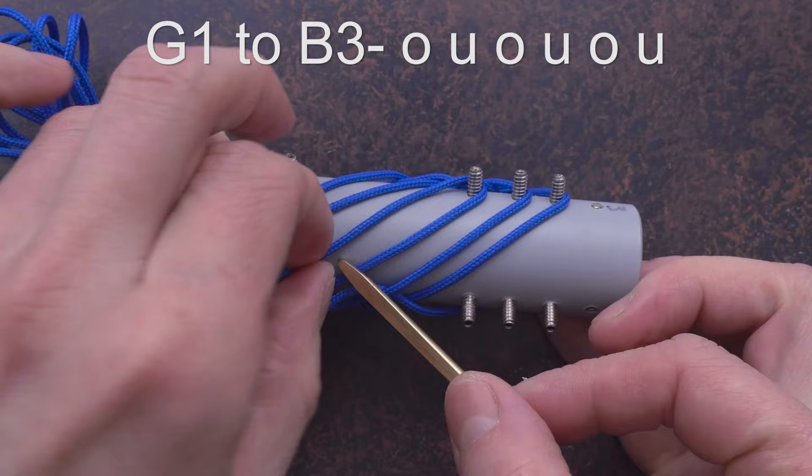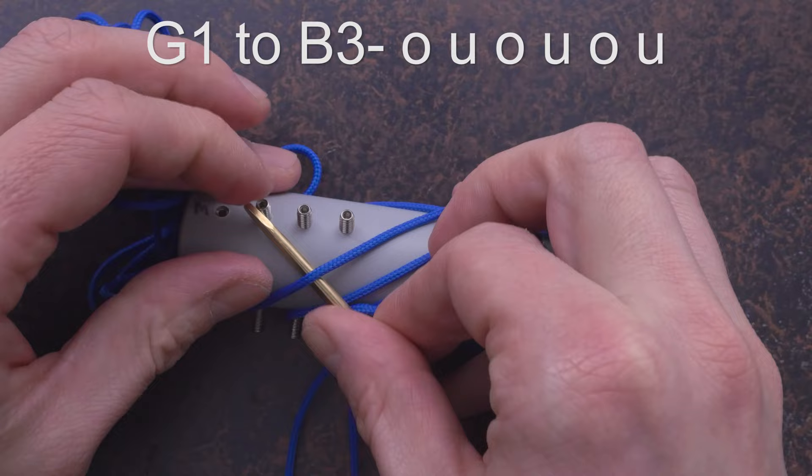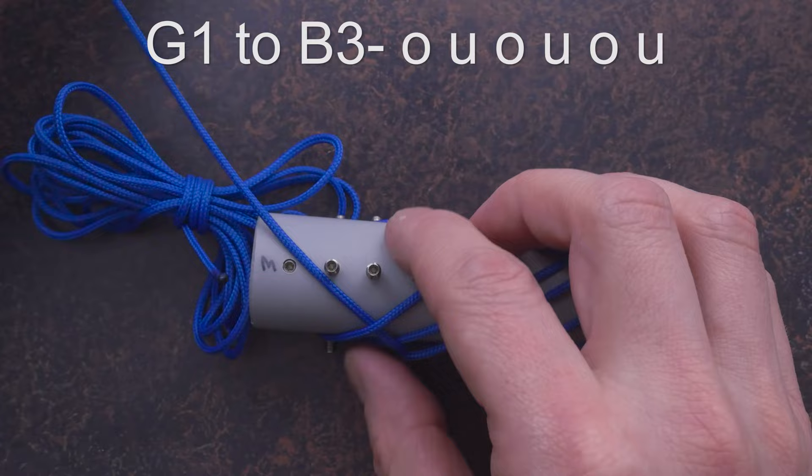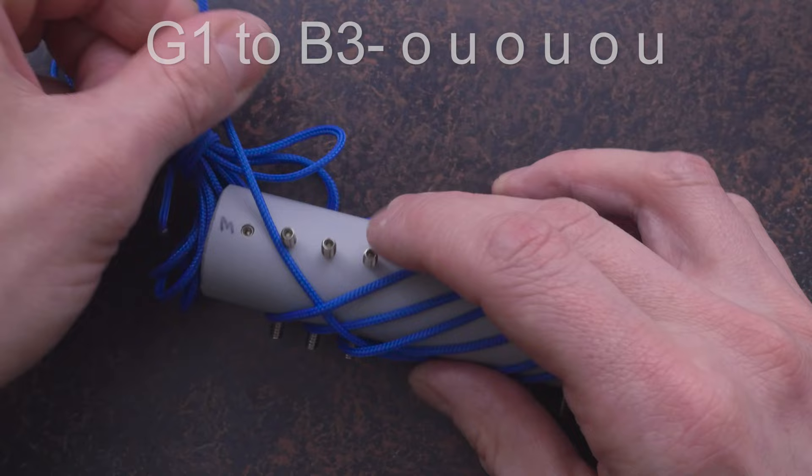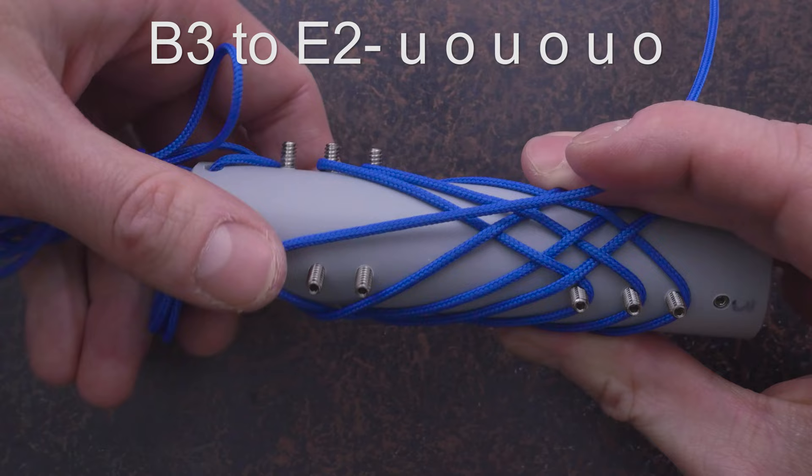From B3, going down, over, under. One more step, going down. So we move to B1, going over, under.